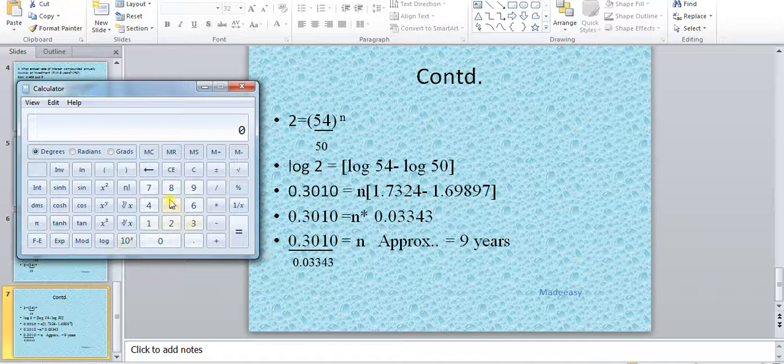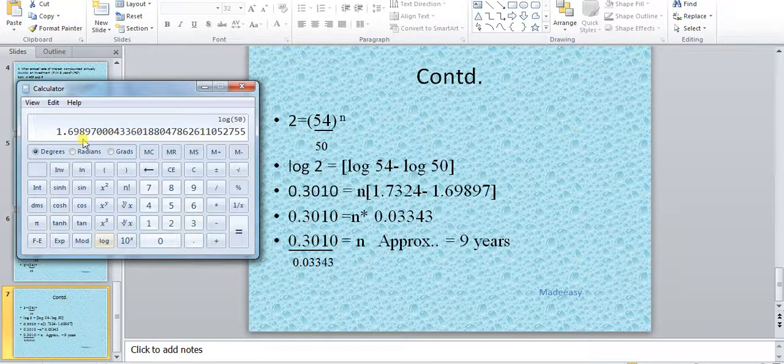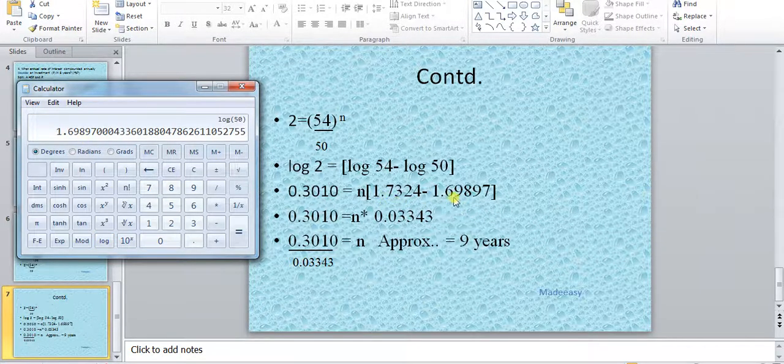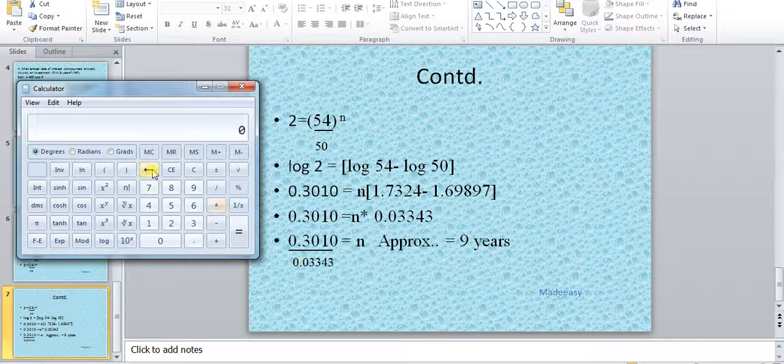Now minus, then log 50. Take log of 50. So this is the value: 1.69897. Now we have to subtract this value from this and we get this. Now we have to take log of 2.